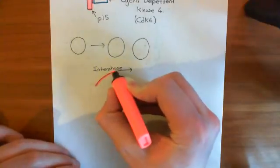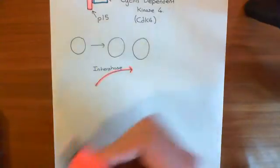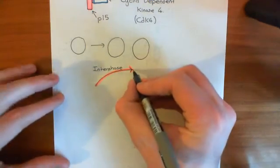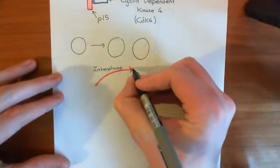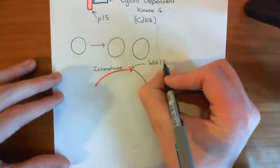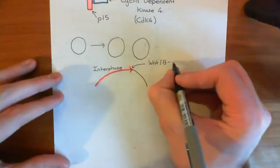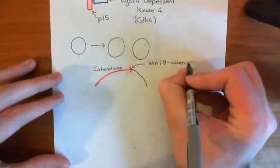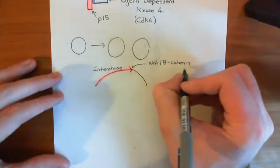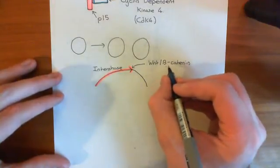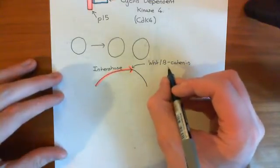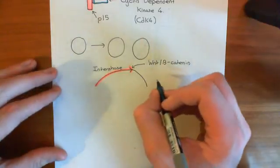Then the cell receives signals that say it's time to divide. There's many different signals for what can tell a cell to start dividing. We've looked at the Wnt-beta-catenin pathway. A cell can receive this Wnt signal, which can cause an increase in the transcriptional co-activator beta-catenin. Beta-catenin will then interact with T-cell factors and lymphoid enhancer factors, and by doing that it will modulate their functions as transcription factors and increase the transcription of genes associated with cell division.